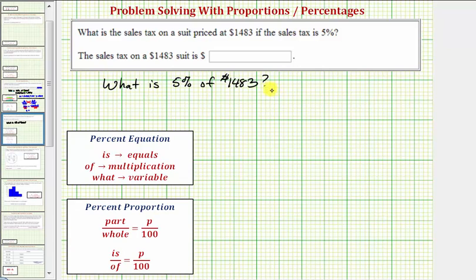To find the percent of a number, the quickest way is to convert the percent to a decimal and multiply. So five percent as a decimal is 0.05, so we'd find the product of 0.05 and 1,483.